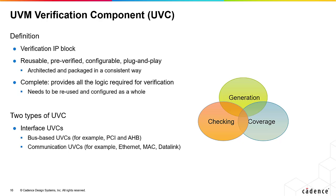There are two types of UVC. Interface UVCs are specific to a bus or communication protocol, for example AHB or Ethernet. Module UVCs are specific to a DUT and include scoreboards and register reference models.